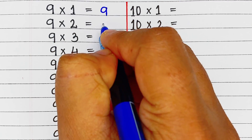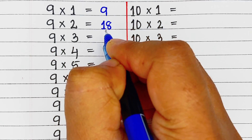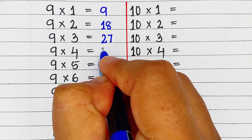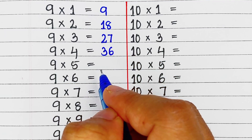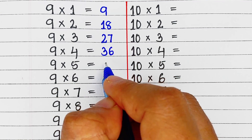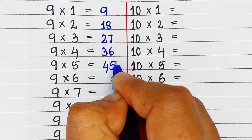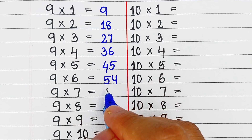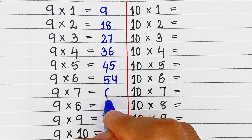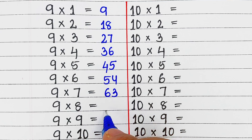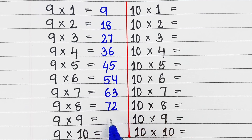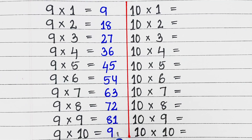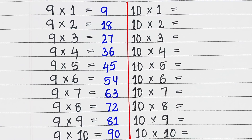Next is table of 9. 9 ones are 9, 9 twos are 18, 9 threes are 27, 9 fours are 36, 9 fives are 45, 9 sixes are 54, 9 sevens are 63, 9 eights are 72, 9 nines are 81, 9 tens are 90.